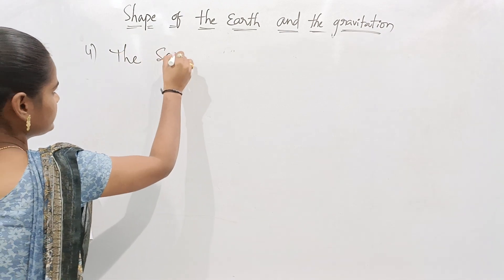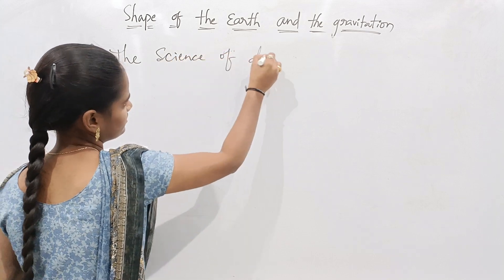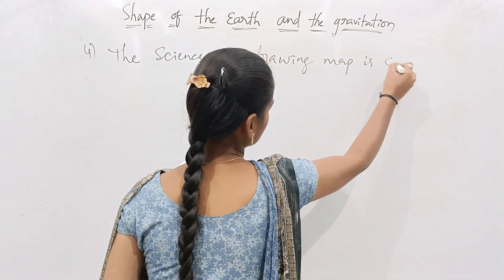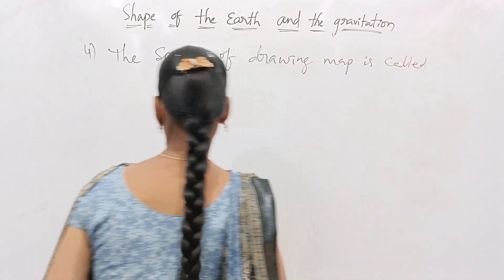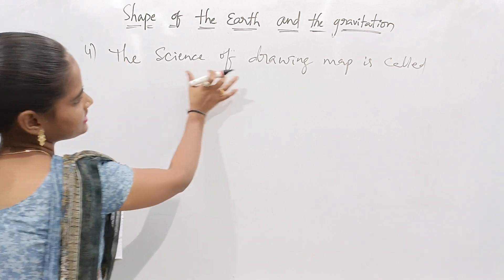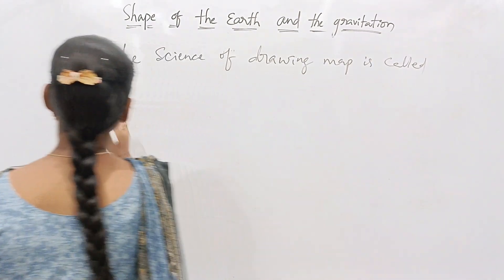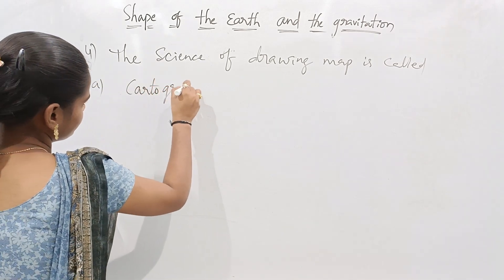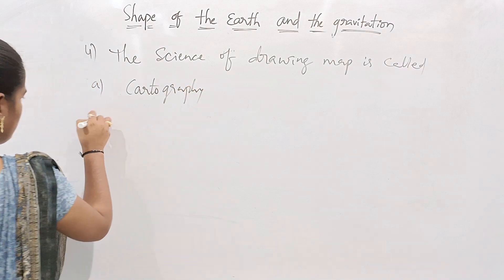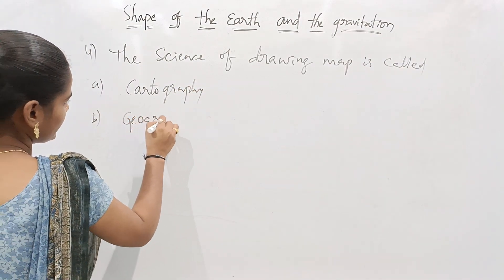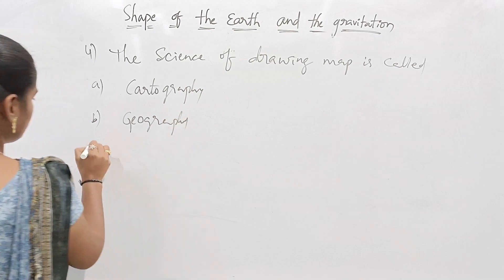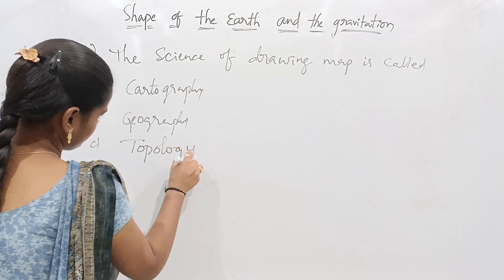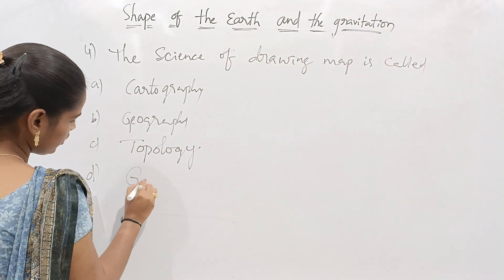The fourth question is: the science of drawing maps is called — Option A: Cartography; Option B: Geography; Option C: Topology; Option D: Geology.